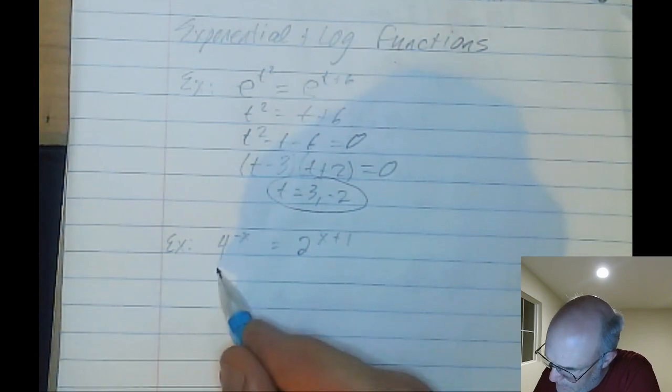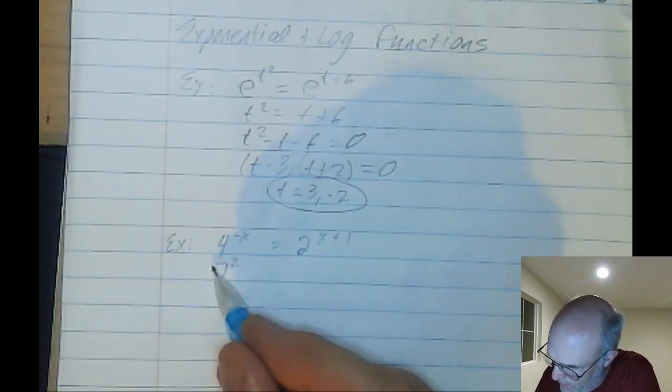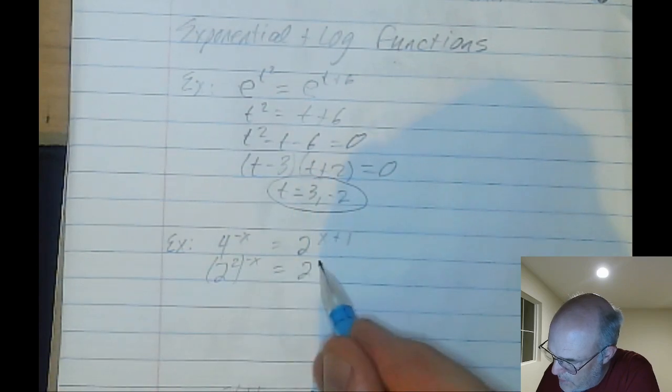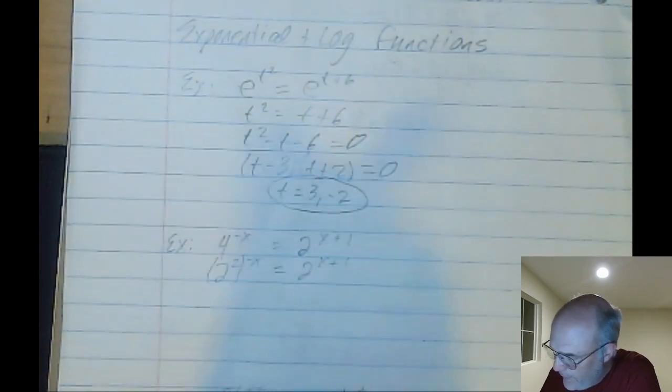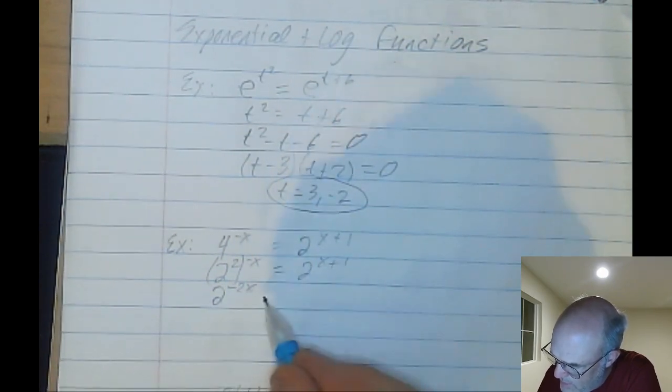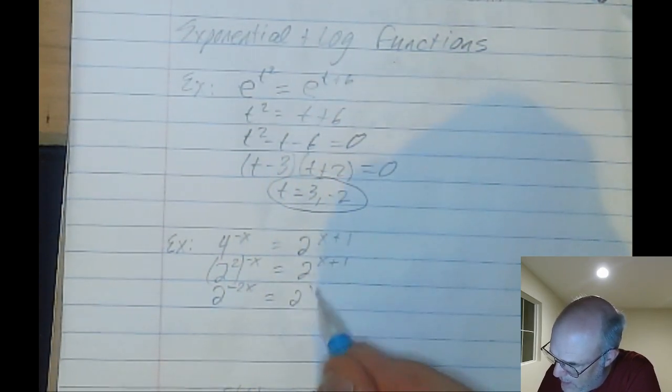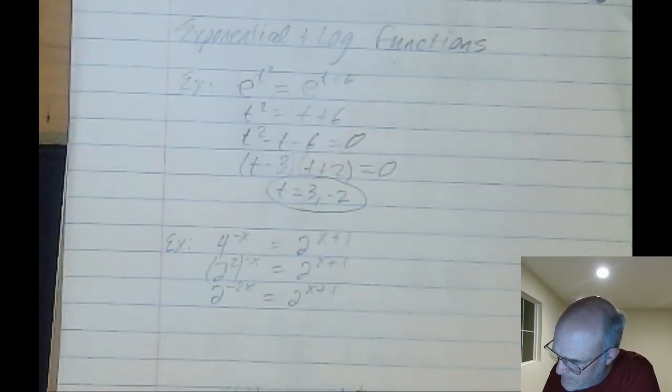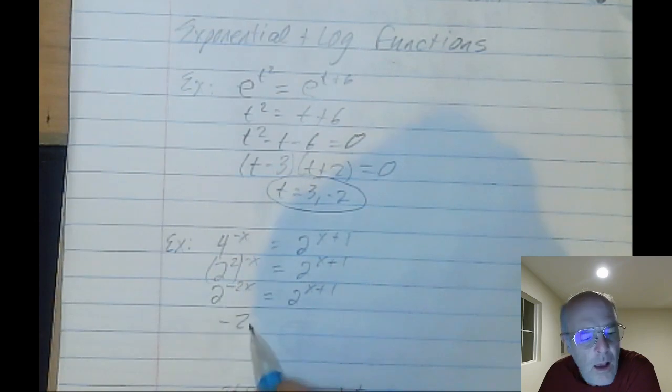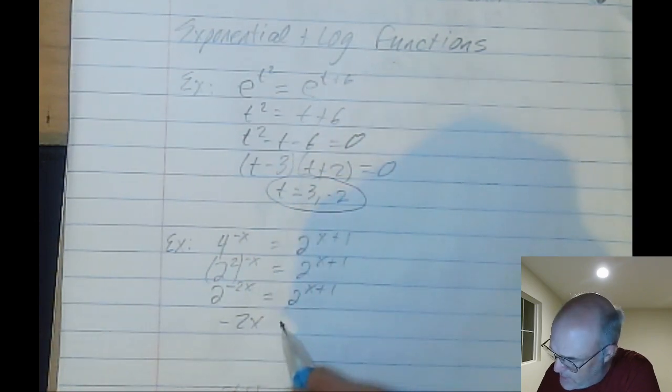So this one I can make as 2 squared to the negative x equals 2 to the x plus 1. So this becomes 2 to the negative 2x equals 2 to the x plus 1. So the bases are the same, so now the exponents are the same.